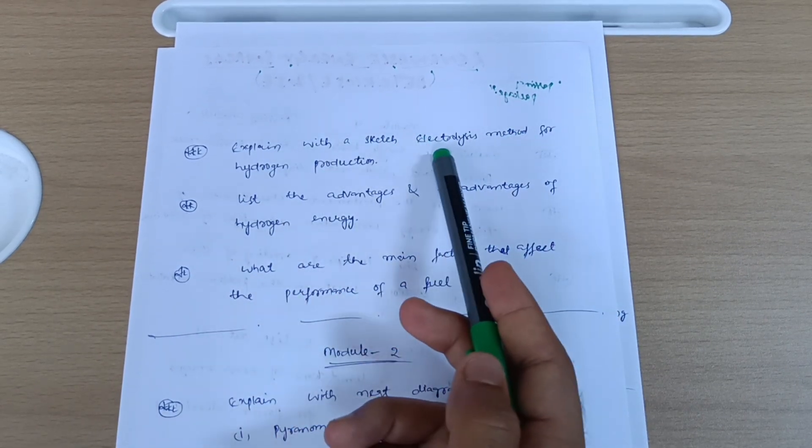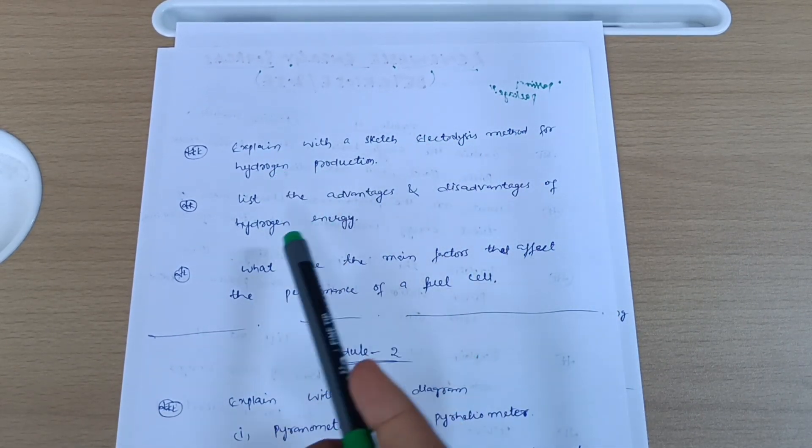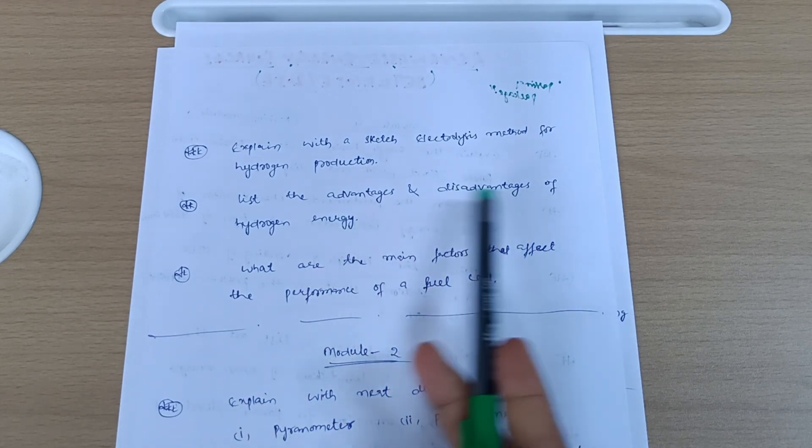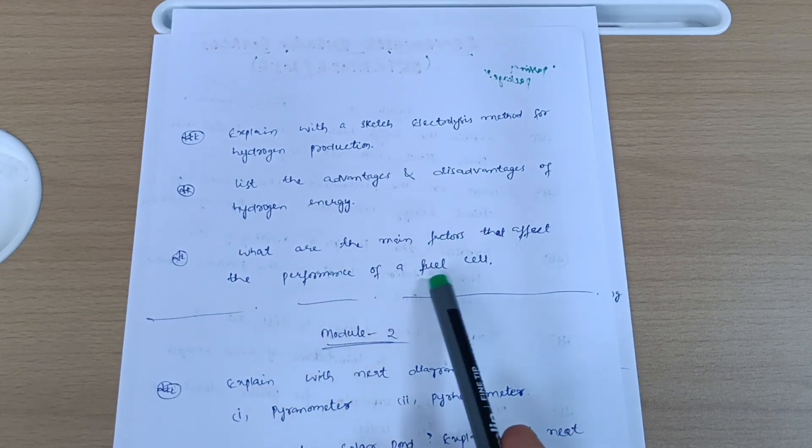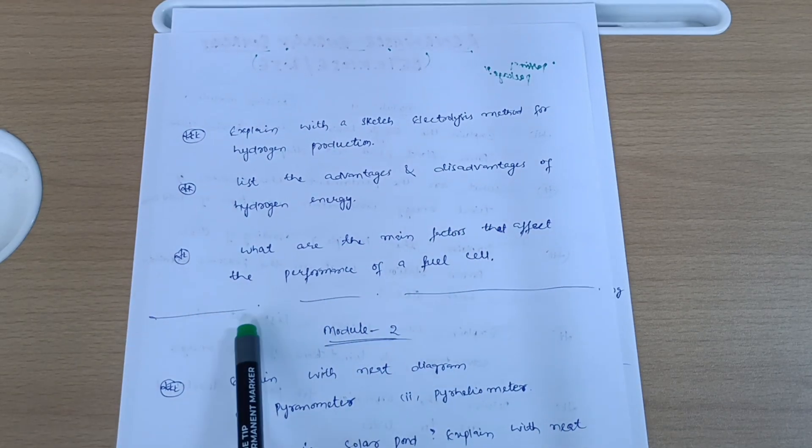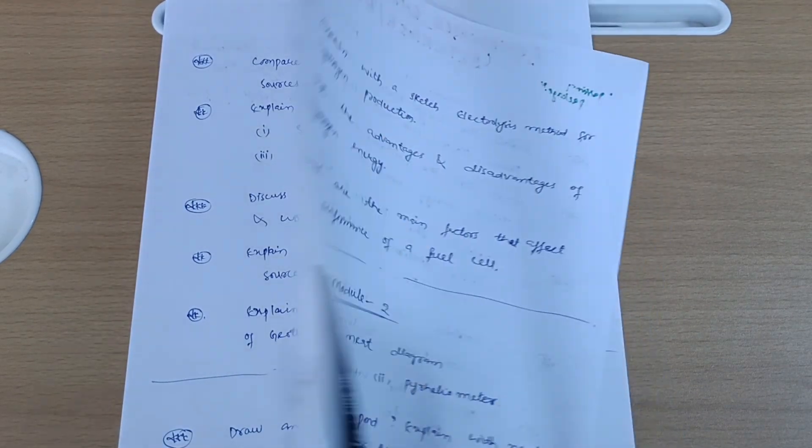Explain with a sketch electrolysis method for hydrogen production. List the advantages and disadvantages of hydrogen energy. What are the main factors that affect the performance of a fuel cell? This is all about Module 5.